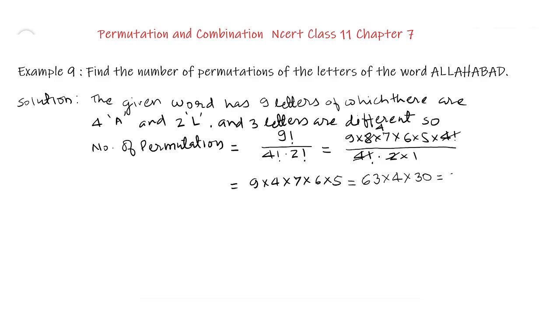This gives us 63 multiplied by 120. This is equal to, we put 0 of 120 and then we multiply 63 by 12.